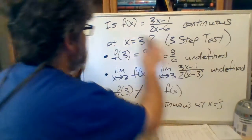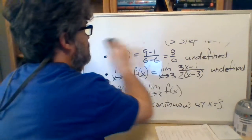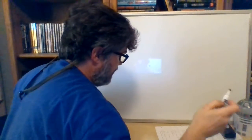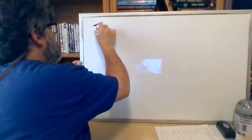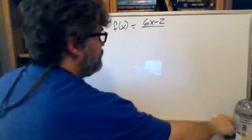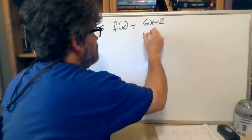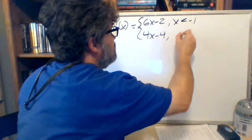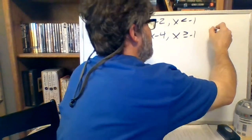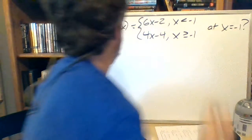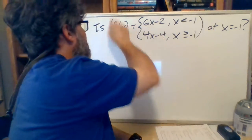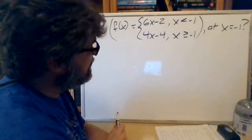So there's a quick example of the three-step test for continuity. Let's do another one. The one I have here is a piecewise function: f(x) equals 6x minus 2 when x is less than negative 1, and 4x minus 4 when x is greater than or equal to negative 1. Is that piecewise function continuous at x equals negative 1?